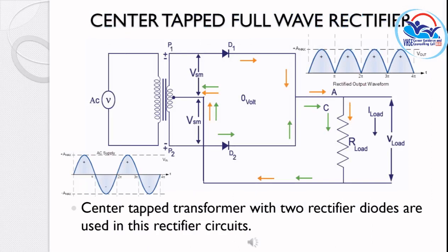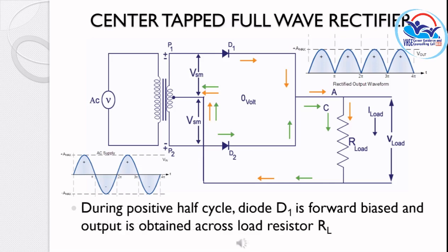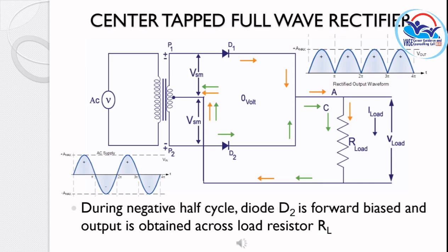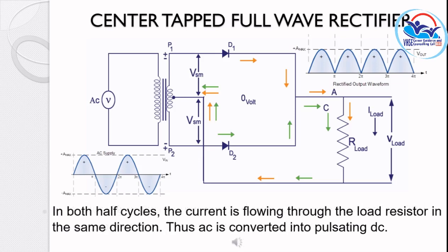The two types are center-tapped full-wave rectifier and full-wave bridge rectifier. The circuit diagram of the center-tapped full-wave rectifier is shown. It uses a center-tapped transformer. During the positive half-cycle, one diode conducts; during the negative half-cycle, the other diode conducts. Current through the load resistor flows in the same direction in both half-cycles, converting AC to pulsating DC.